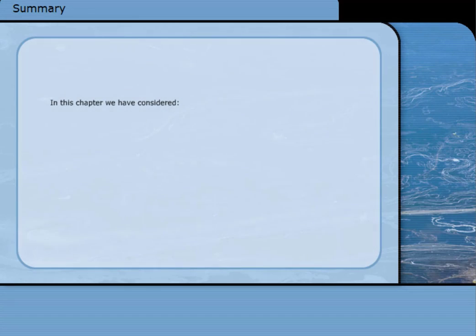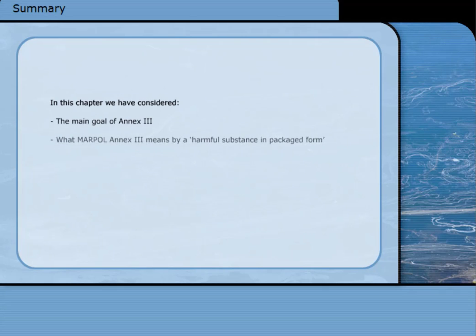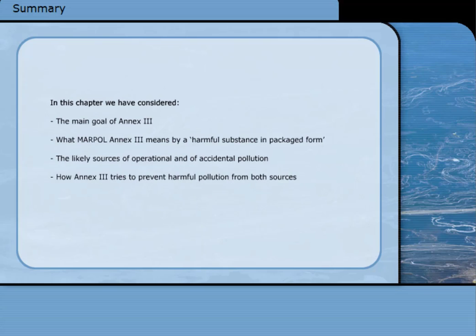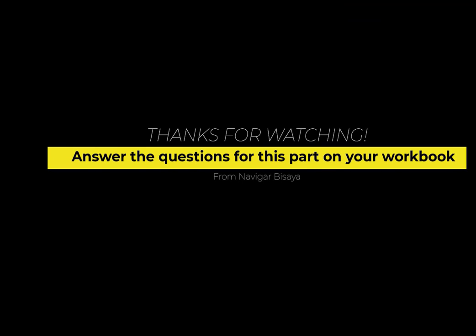We have now reached the end of this chapter on MARPOL Annex 3 as it applies to ships carrying harmful substances in packaged form. We have considered the main goal of Annex 3, what MARPOL Annex 3 means by a harmful substance in packaged form, the likely sources of operational and accidental pollution, and how Annex 3 tries to prevent harmful pollution from both sources.